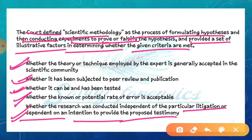چوتھا سوال یہ تھا کہ whether the research was conducted independent of the particular litigation or dependent on an intention to provide the proposed testimony. یعنی جو research conduct کی گئی تھی وہ independently کی گئی تھی یا کسی particular proposed testimony کے intention پر۔ اگر ان ساری questions پر reliable ہو تو report کو صحیح مانا جاتا تھا، ورنہ reject کر دیتے تھے.